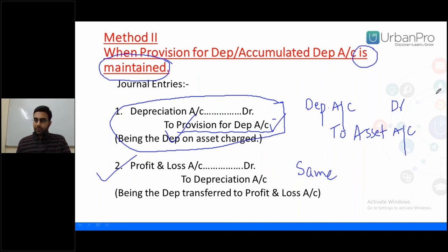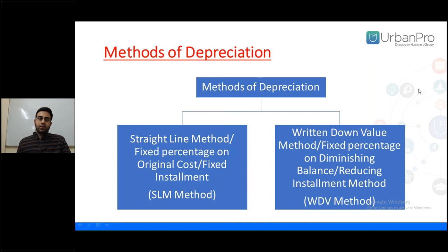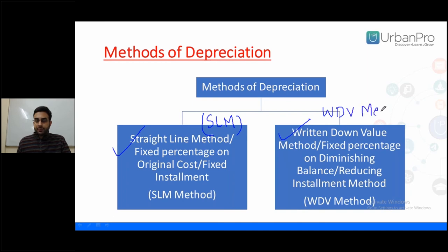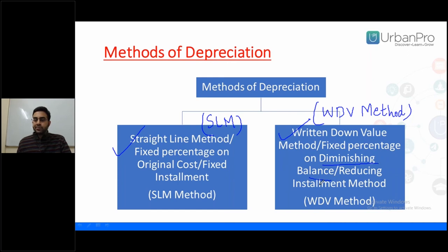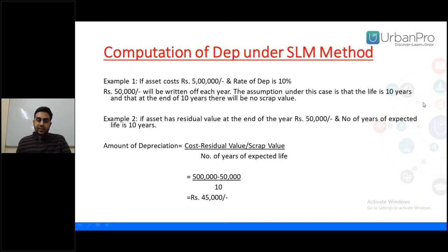There are two main methods of charging depreciation: the Straight Line Method (SLM), also called fixed installment method or fixed percentage on original cost; and the Written Down Value method (WDV), also called reducing installment method or fixed percentage on diminishing balance.